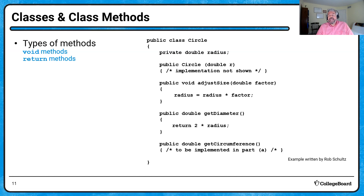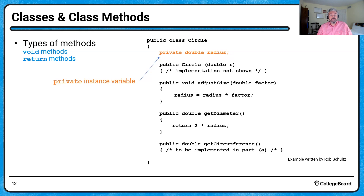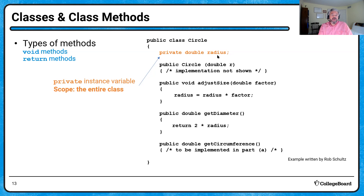Let's do some review of classes and class methods. I came up with a simple demo class — a Circle class with one private instance variable. Notice the variable is specifically marked as private. Within the AP framework, there will never be a time to have an instance variable that is public. We always want to protect our data and keep it private. The instance variable has a scope that covers the entire class, so we have to be careful about redefining it inside any of the methods.